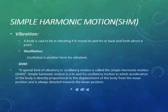Let's start from the basic term which is vibration. A vibration is the to and fro motion of a body about a fixed position, or a body is said to be vibrating if it moves to and fro or back and forth about a point. Oscillation is another term for vibration — basically vibration and oscillation are the same.